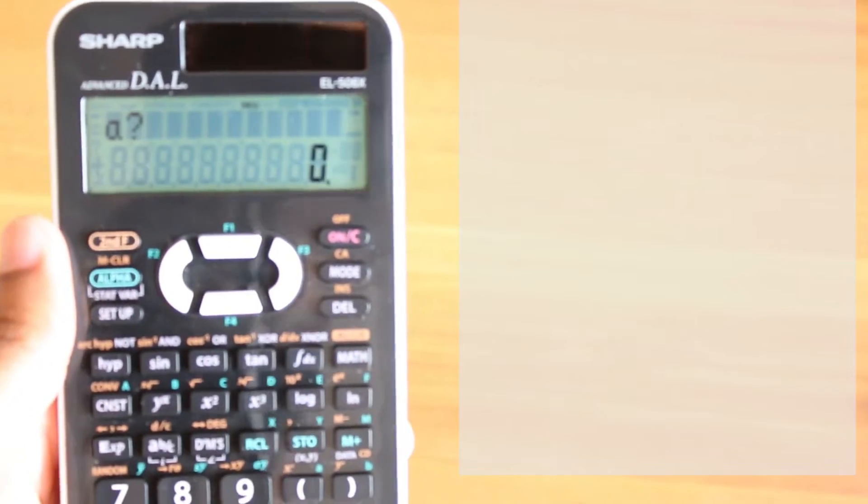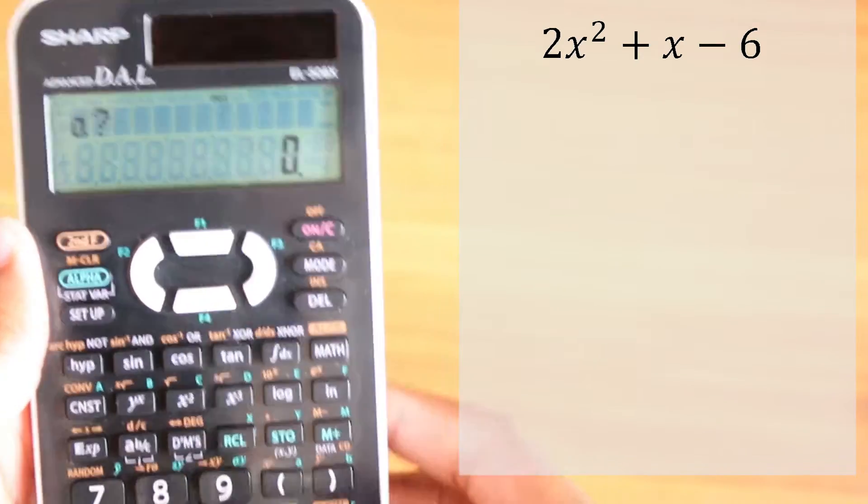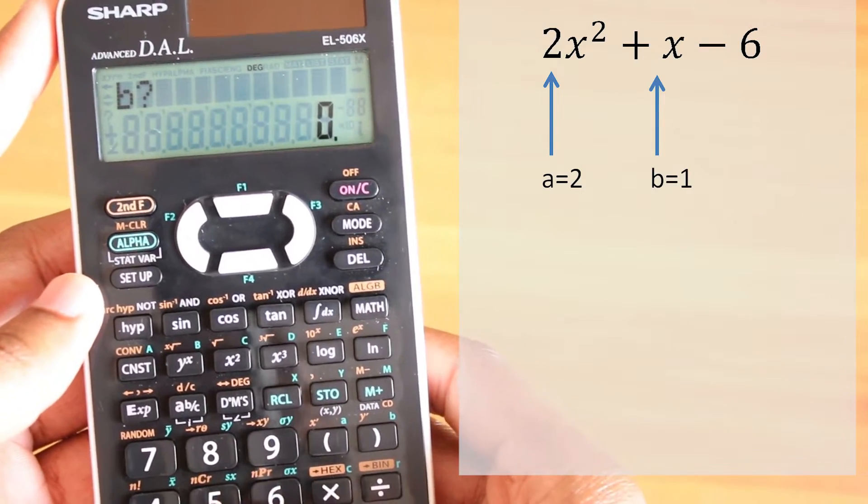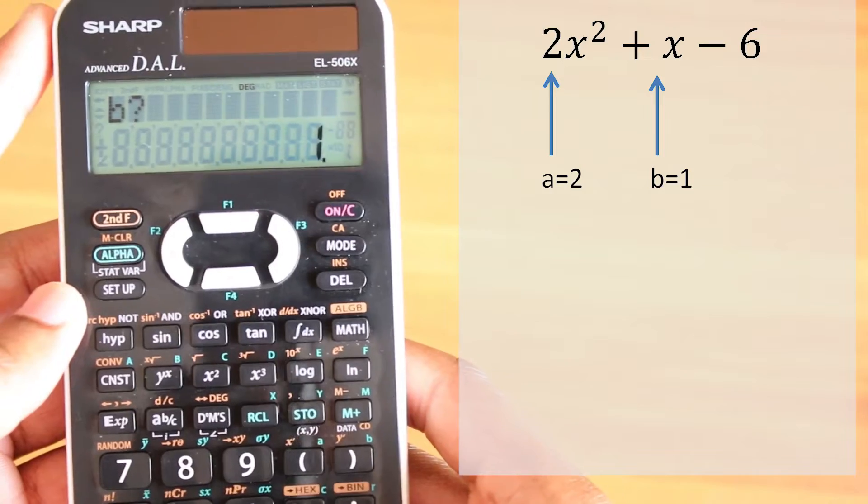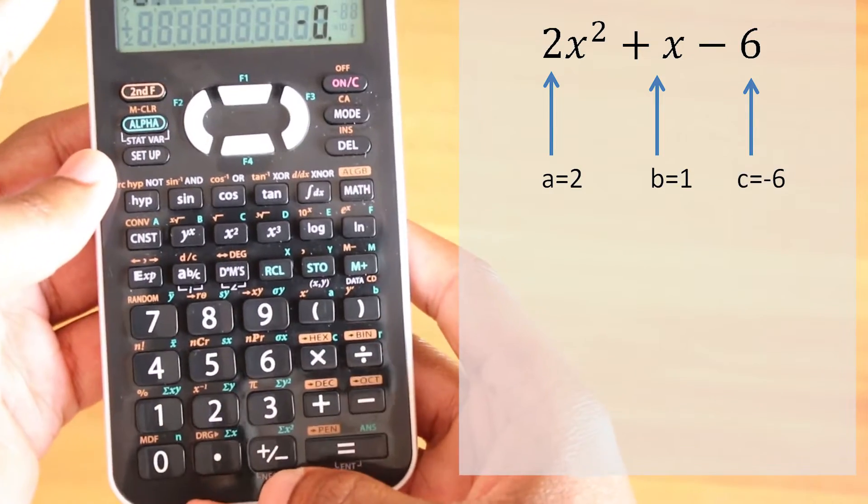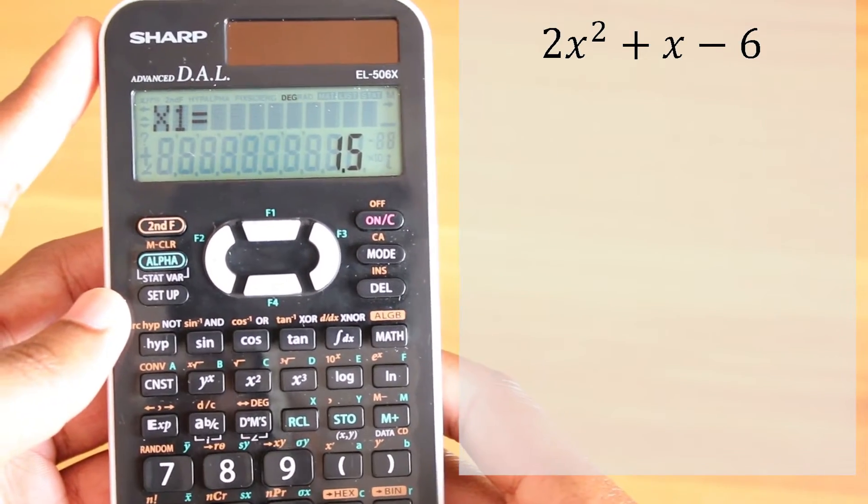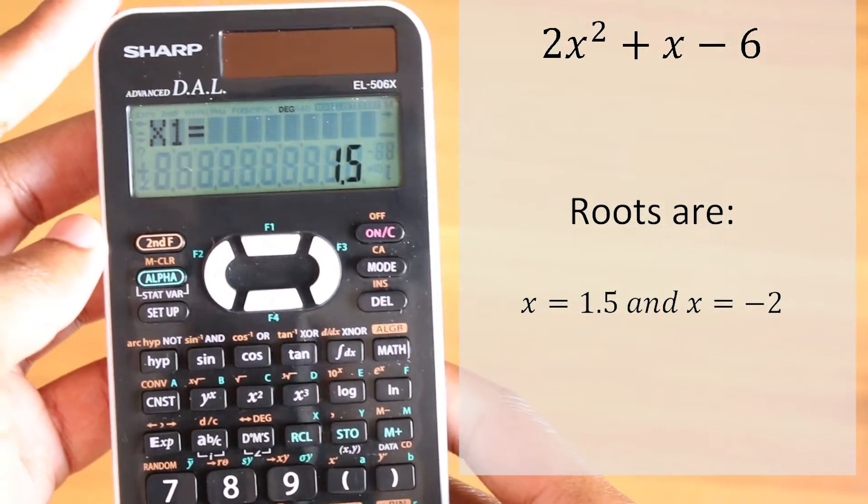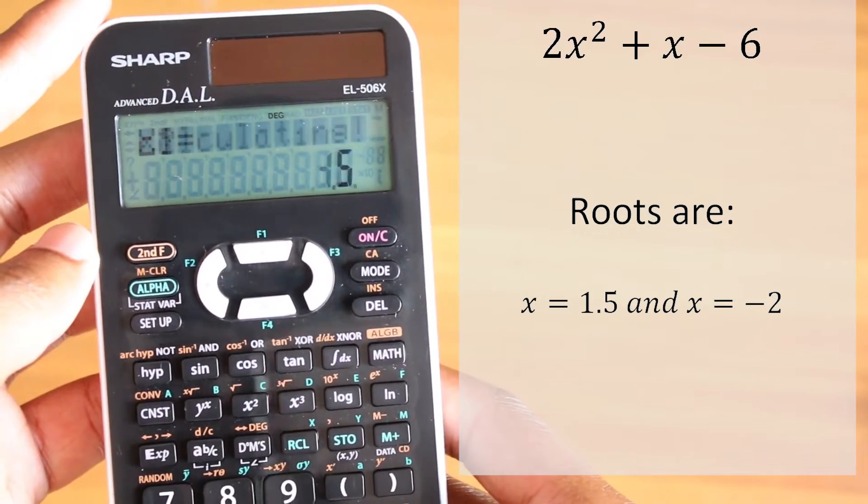For example, if you have a quadratic equation like 2x² + x - 6, a would be 2, so I'll press 2, press equal or enter. I will press 1 for b, press enter, and for c I will press negative 6 using this negative symbol. This gives me my answer straight away. The first x value is 1.5, press enter again, and the next x value is -2. You can always go back and change your constants.